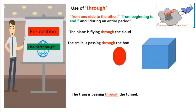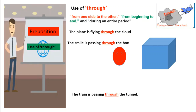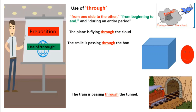Use of 'through'. 'Through' is used to mean from one side to the other side, from beginning to end, and during an entire period. Like, the plane is flying through the cloud. The smiley is passing through the box. Or, the train is passing through the tunnel.